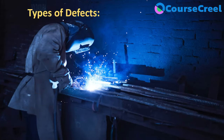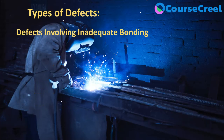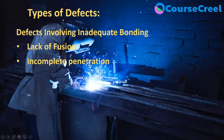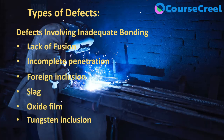The third type of defect involves inadequate bonding. In this category, we consider lack of fusion, incomplete penetration, foreign inclusion, slag, oxide film, and tungsten inclusion as defects in the welding joint. These are the defects considered in welding or welding joints.